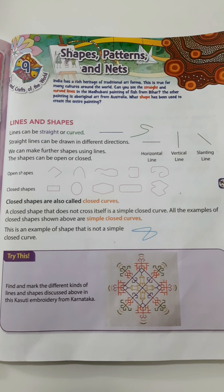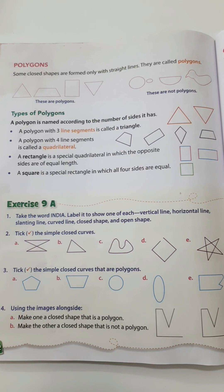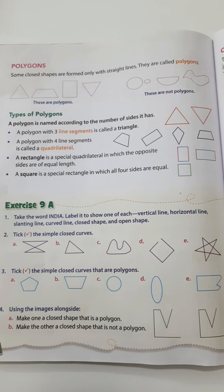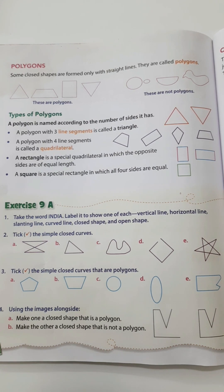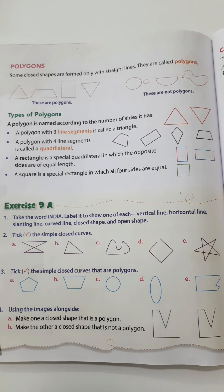Let's move on to the second topic, which is polygons. Some closed shapes are formed only with straight lines — they are called polygons. When we draw closed shapes with the help of straight lines only, we say those shapes are polygons. Even though circles, semicircles, and other curved shapes are also closed shapes, they don't belong to polygons because we draw those shapes with the help of curved lines. Polygons must be drawn with straight lines only.